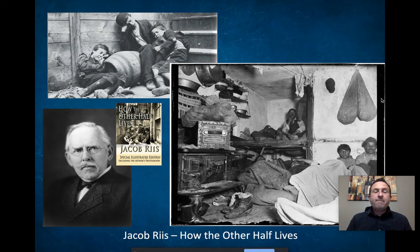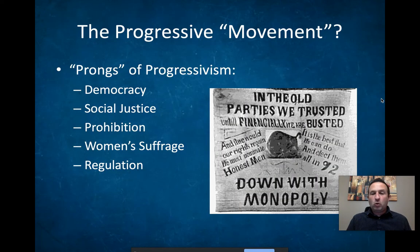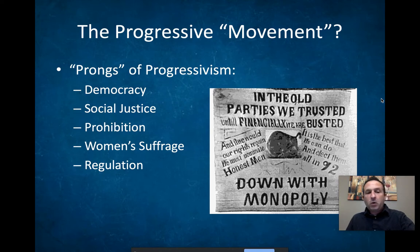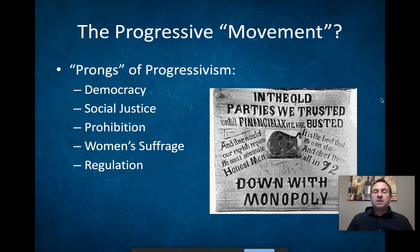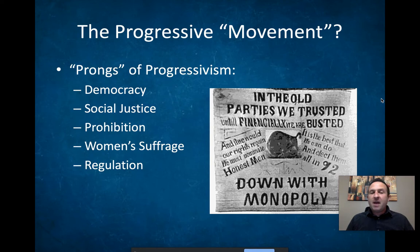To make this a little clearer, I've broken it down into different categories — what we'll call the prongs of progressivism. Remember, progressivism is an umbrella term. Each of these categories — democracy, social justice, prohibition, women's suffrage, regulation — represents a different facet of it. We're going to go through each one and provide a few choice examples to understand just how diverse this is. This is not one thing. Let's start with democracy.